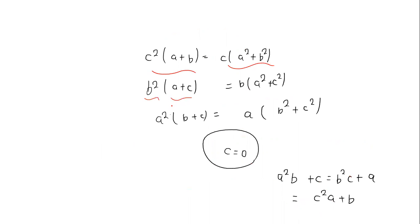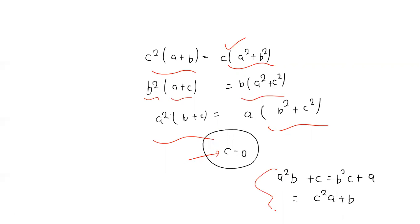B squared times (A plus C) equals B times (A squared plus C squared), and A squared times (B plus C) equals this expression. Now we want to divide by C, but considering the case where C equals 0. So going back to the second condition we placed.